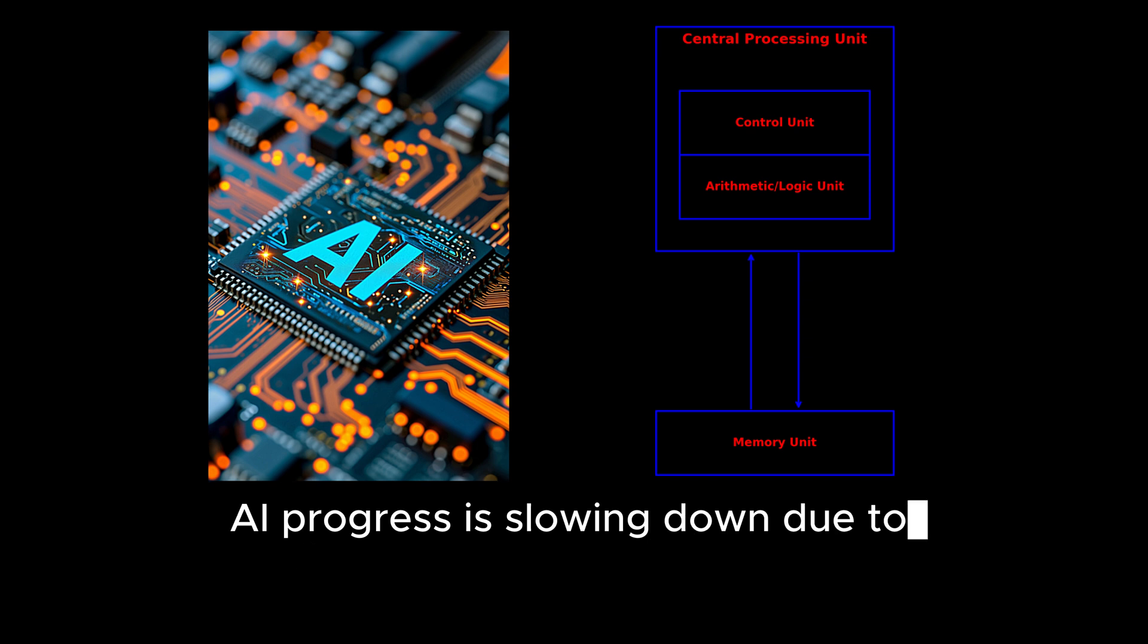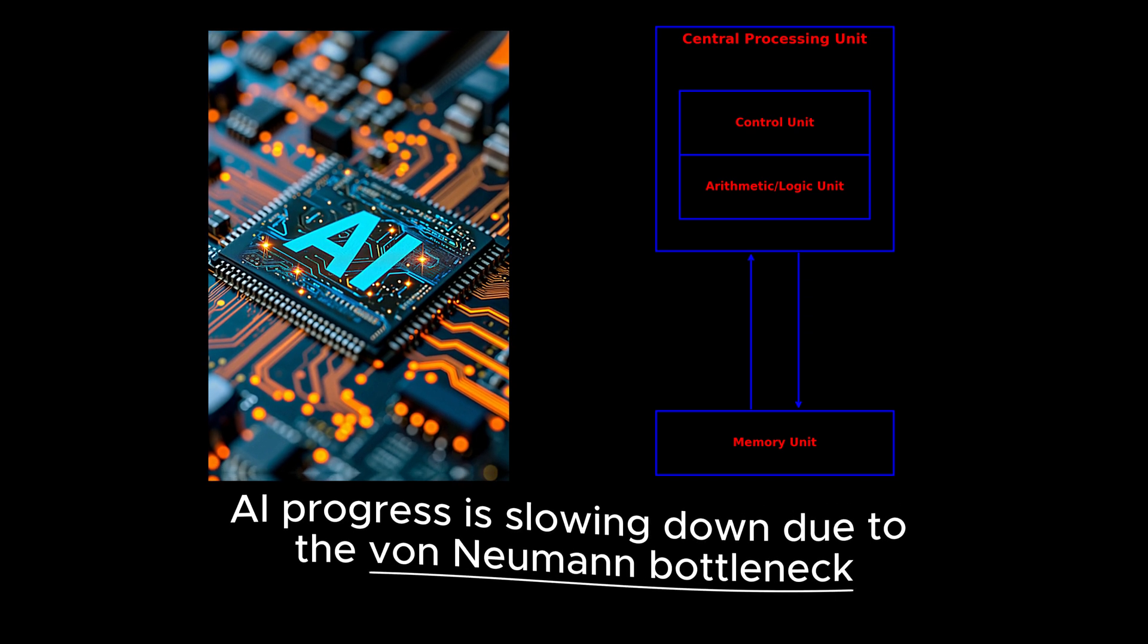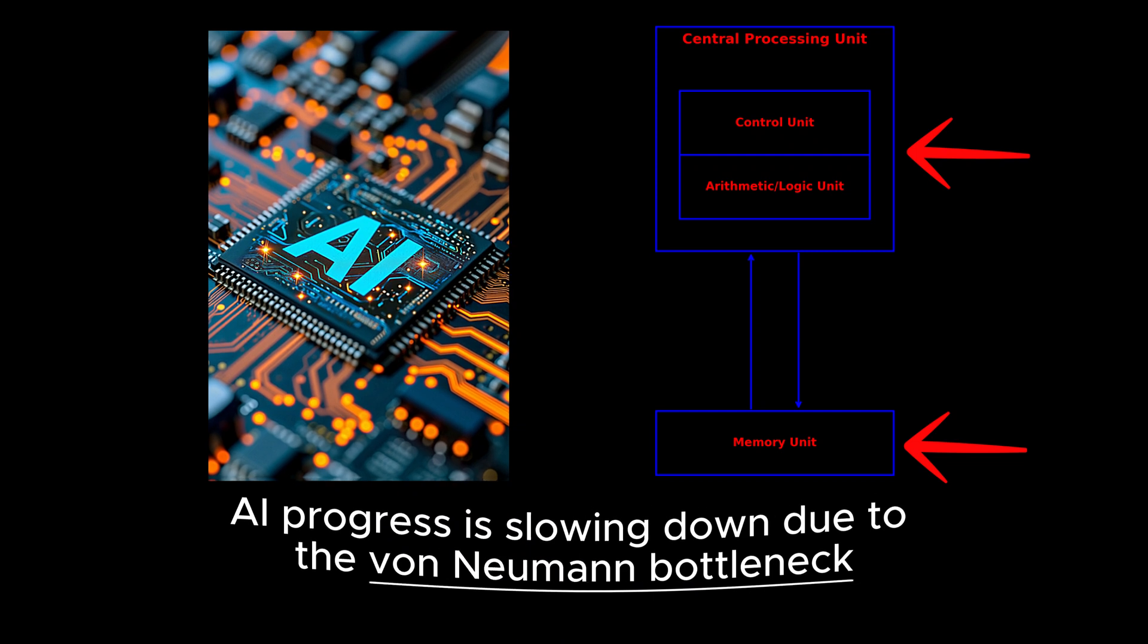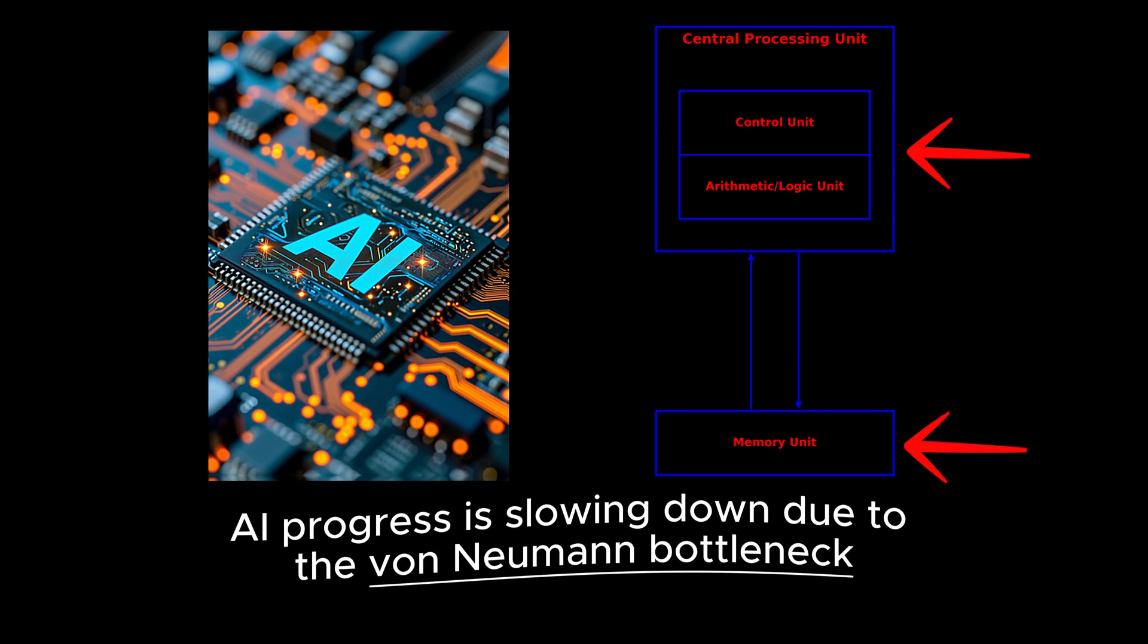AI systems are hitting a wall. The von Neumann bottleneck, the separation of memory and processing that we will cover later in the video, slows progress and uses up a lot of energy.